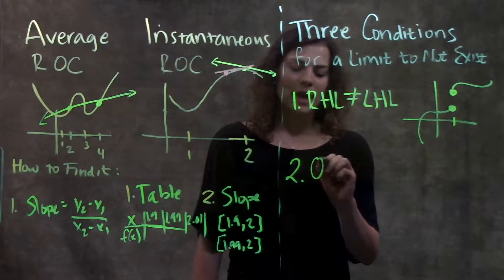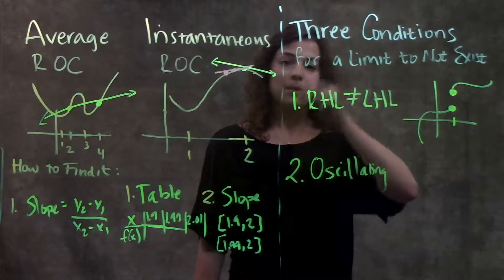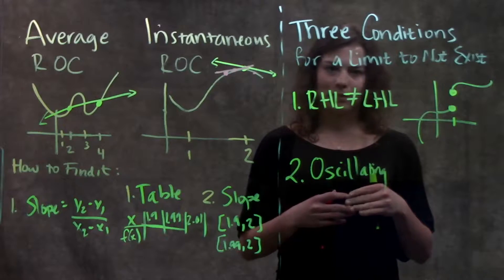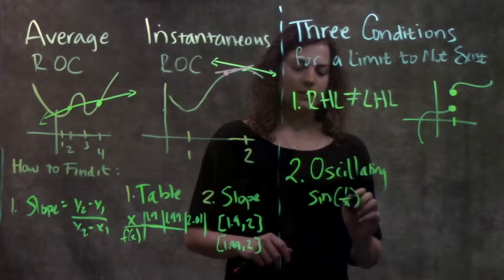Condition two for a limit to not exist is if the function is oscillating. That means that it's going up and down super, super quickly at this one point. You can't tell what value the function is approaching.